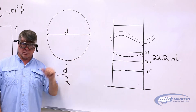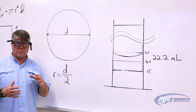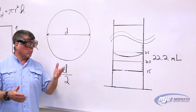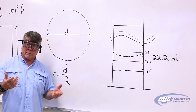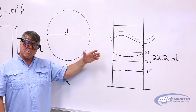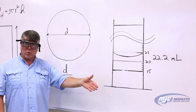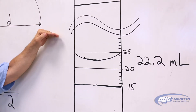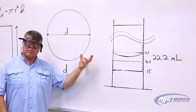In the second part of the experiment, we're going to determine the density of some unknown metal shot. With metal shot there's no uniform shape, so we can't calculate its volume with a formula. Instead, we're going to use water displacement. The mass is easy — we weigh it the same way as the metal cylinder. For the volume, we take a graduated cylinder, fill it about halfway with water, read the initial volume, pour in the metal shot, read the new volume, and the difference between those two volumes is the volume of the metal shot.